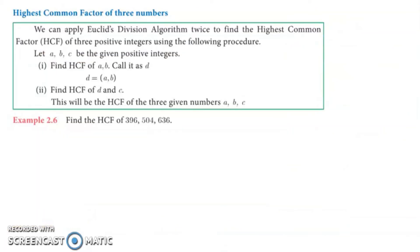Let's proceed to find the highest common factor of three numbers. Given three numbers A, B, and C, you first find the HCF of A and B. Then you take that result and find the HCF of it with the third number C. Once you get the HCF of those two numbers, that will be your final answer.